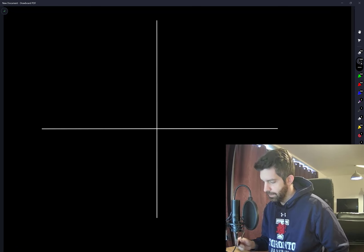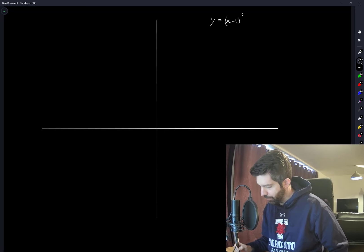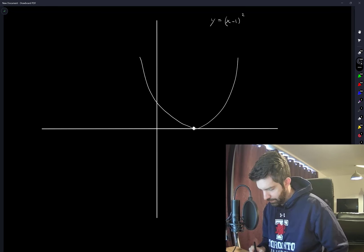So y equals x minus 1 squared. This is an upwards opening parabola, and when x equals 1, the parabola equals 0. So we have something like this. This intersection point when x is 0 is clearly y equals 1.